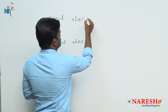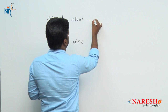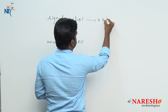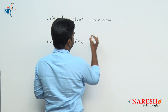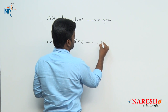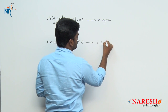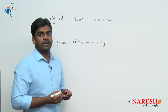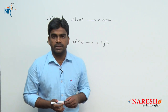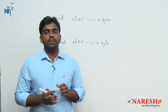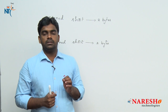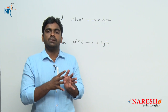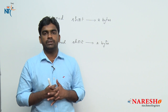What is the size of short? Either it is a signed short or unsigned short, it occupies two bytes of memory. Using two bytes of memory, what is the minimum value we can store and what is the maximum value we can store?